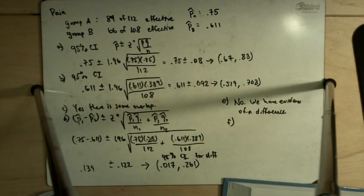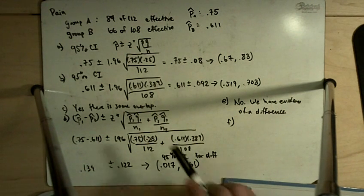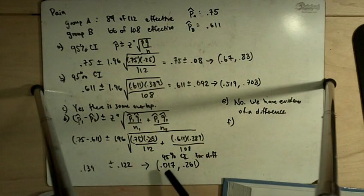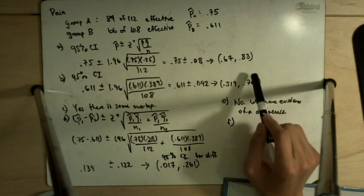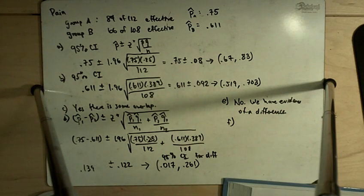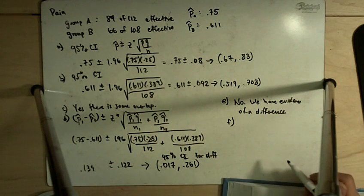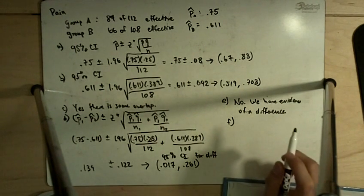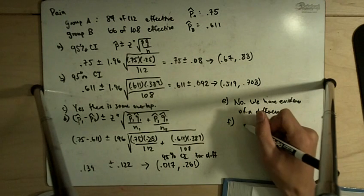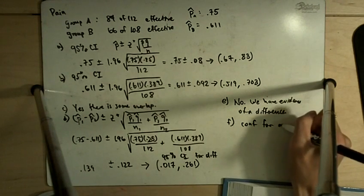And then F says, why do the results in Part C and E seem contradictory? If we want to compare the effectiveness of these two pain relievers, which is the correct approach and why? So in C, we found that there is overlap between these two confidence intervals. And in Part D, we found that we have evidence of a difference. So it seems like over here in Part C, that because there's overlap, we might think that the two pain relievers could be equally effective. But then when we do the confidence interval for the difference, we find that they're not equally effective. So the correct way to do it is in Part D, confidence interval for a difference.